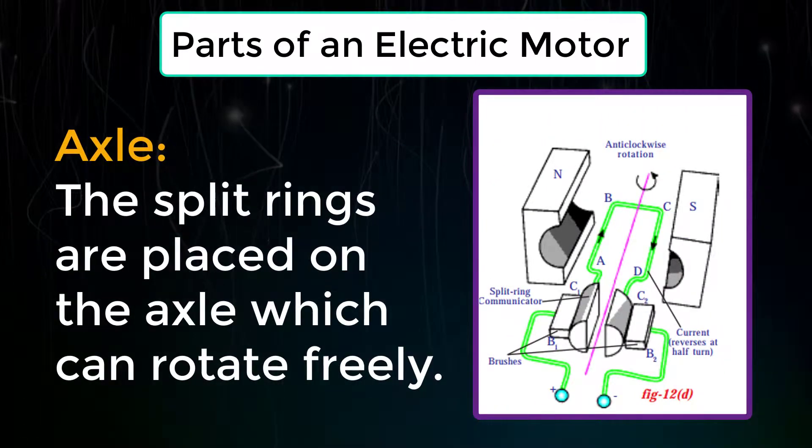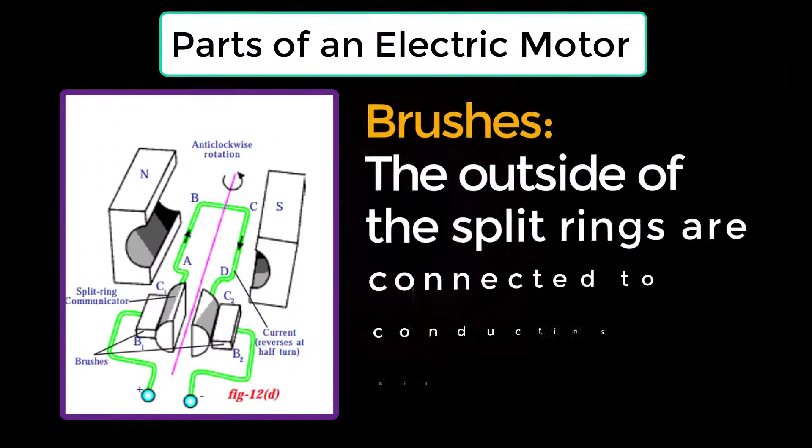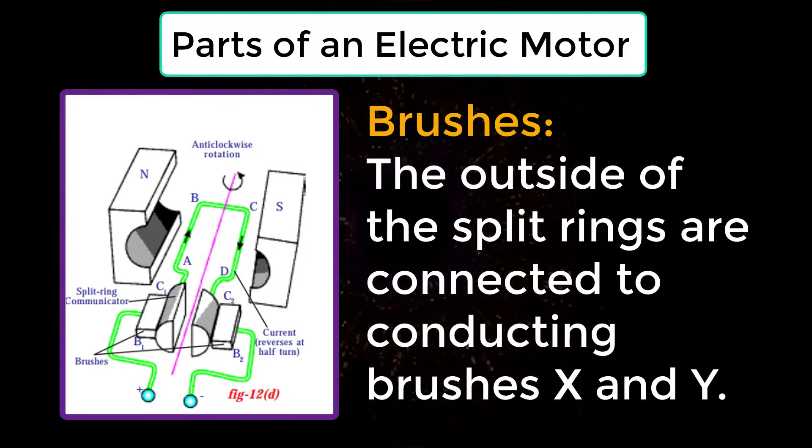Axle: The split rings are placed on the axle which can rotate freely. Brushes: The outside of the split rings are connected to conducting brushes X and Y.